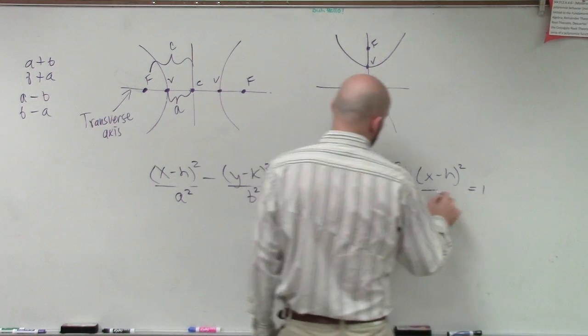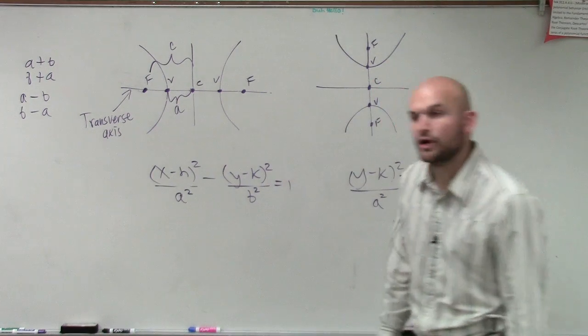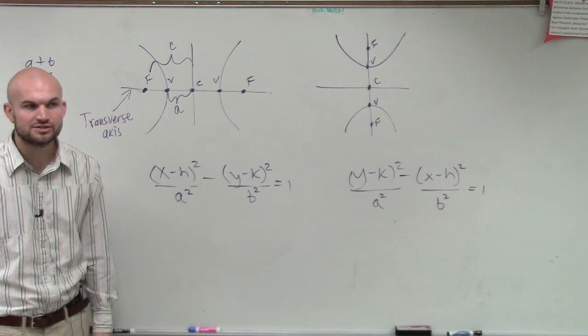So what you guys want to make sure is we're always going to be subtracting A² from B². So then you might say, well, if A² is always minus B², how do we know if it's going to be a vertical or a horizontal transverse axis?